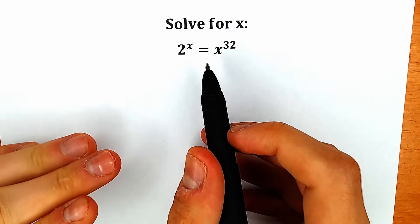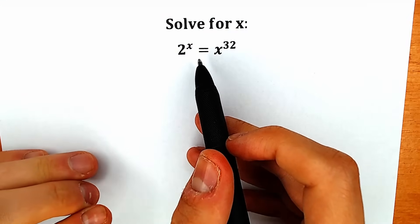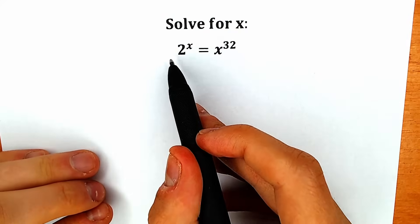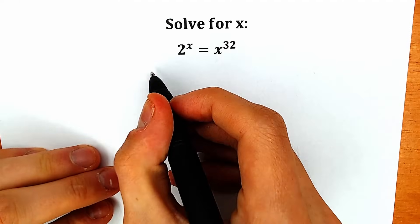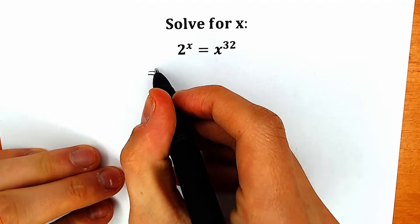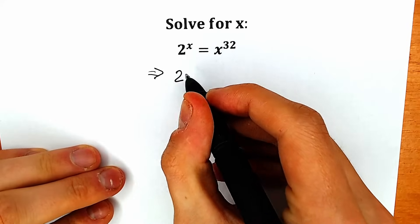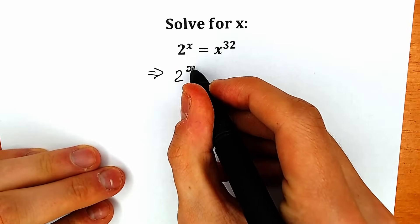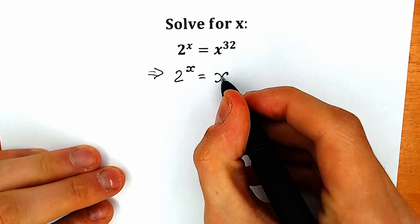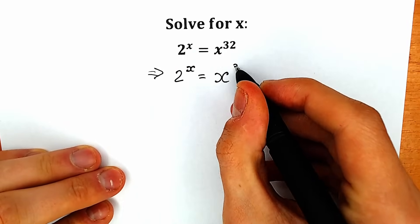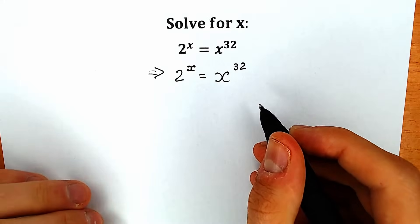So the first step — how can we solve this question? Let's try to group our constants on the left side and our variables on the right side. First of all, let's rewrite our question. So we have 2 to the power x equal to x to the power 32.